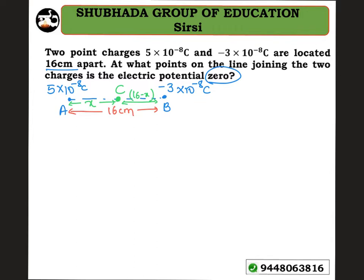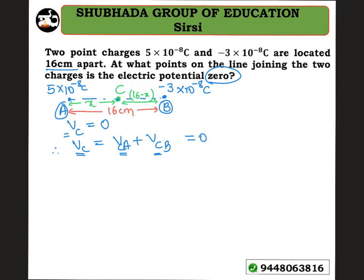The condition is that the potential at C must be equal to zero. The potential at C is due to the charge at A and the charge at B. Since potential is a scalar quantity, I can use scalar addition: Vc = Vca + Vcb, and that must equal zero.